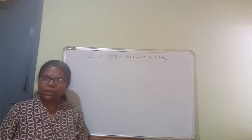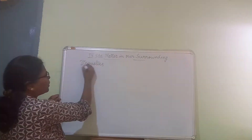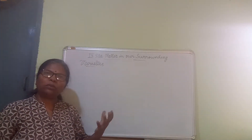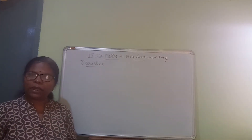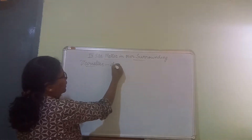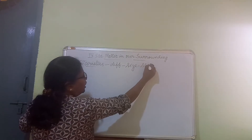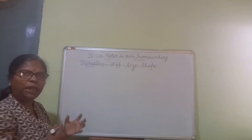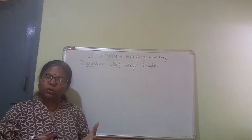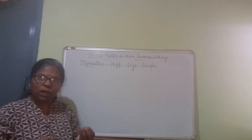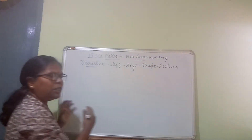We have varieties of matter around us, and all these matters are different in their size, shape, as well as texture. Texture means when we touch them — some of them are very smooth, some are very rough. So this we call it as texture; they are different in texture also.